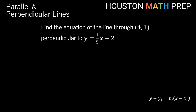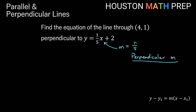Let's look at a couple of examples. We want to find the equation of the line through (4, 1), perpendicular to y equals one fifth x plus 2. Looking at this line, the slope is positive one fifth. To find the perpendicular slope, we change two things: we change the sign to negative, and we take the reciprocal — so instead of one fifth, we get five over one, which is negative five. So the perpendicular slope is negative five.